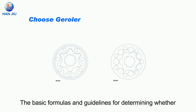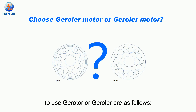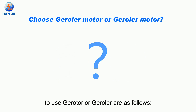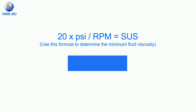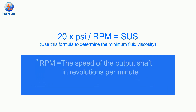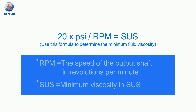The basic formulas and guidelines for determining whether to use a gerator or geraler are as follows. Use the formula: 20 times PSI divided by RPM equals SUS, to determine the minimum fluid viscosity. RPM is the speed of the output shaft in revolutions per minute, and SUS is the minimum viscosity in SUS.